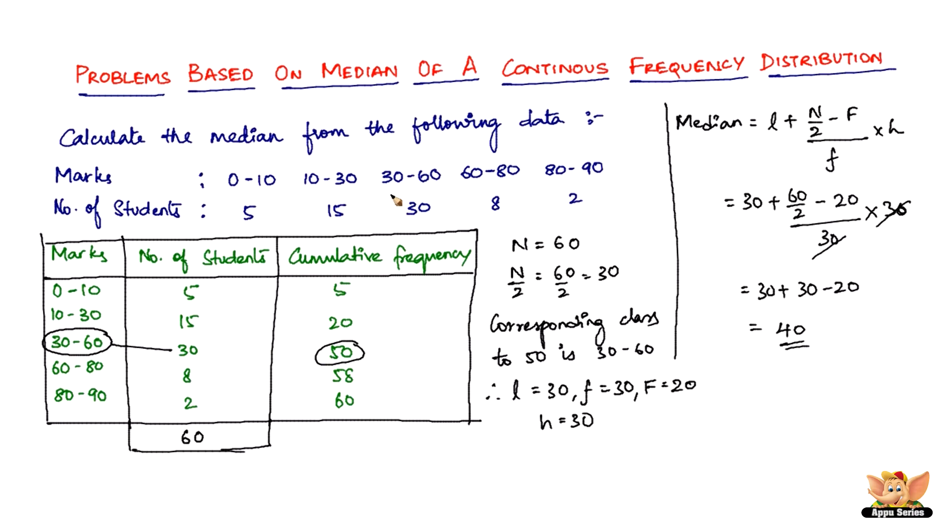And again, the method that we've used to solve this has not been very different, except that once you find the corresponding class, from there you get four different data: you get the lower limit, you get the frequency corresponding to that class interval, and then you get the cumulative frequency corresponding to the class preceding to that, and then you get the size of the class interval, the particular class interval.